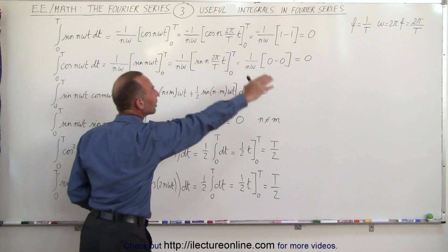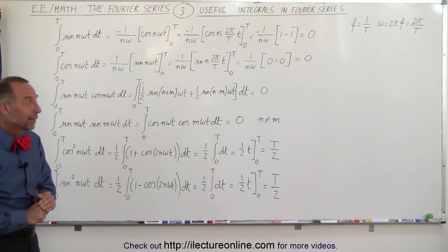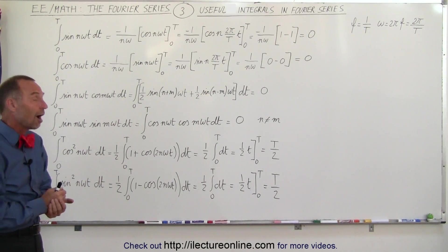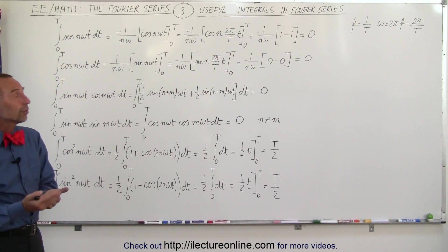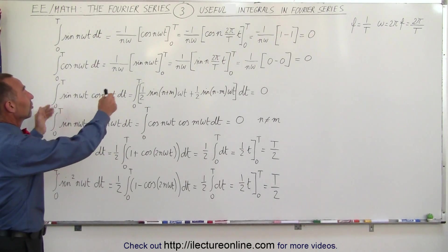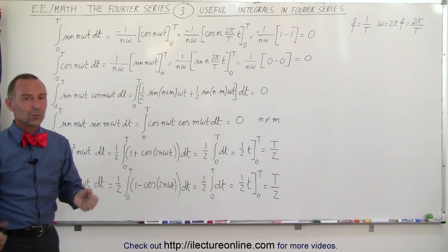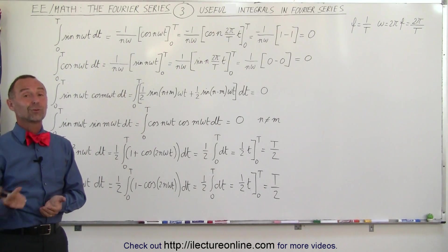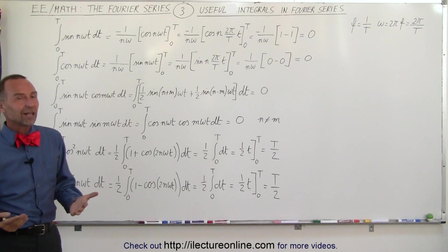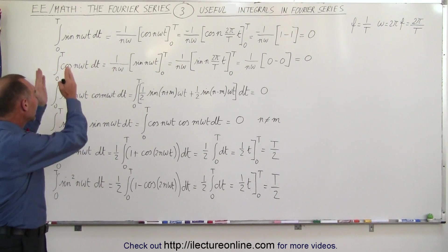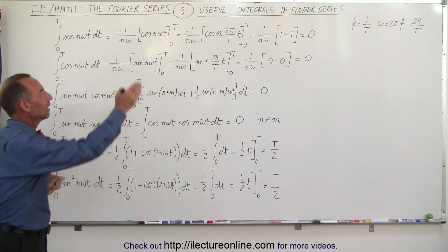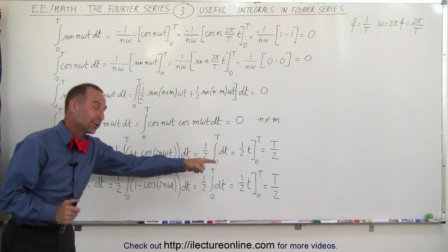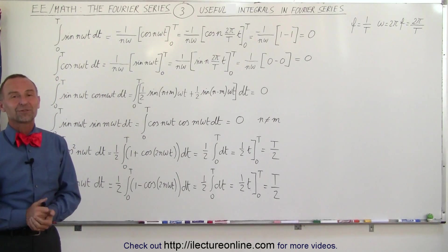So for all these integrals, they will always be zero, except for the special case where n and m are equal to one another — giving sine squared or cosine squared — where the integral equals T over two. Otherwise, in all cases, those integrals equal zero. This makes finding the Fourier series much easier, because we can recognize which integrals are zero and save a lot of time without having to work them all out. And that's how it's done.